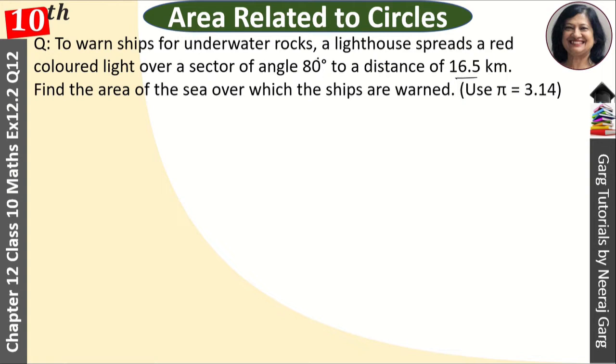So see, we have simple given theta, theta is equal to 80 degree given. And this distance is given, where the light is spread, that is 16.5 kilometer, this is our radius.